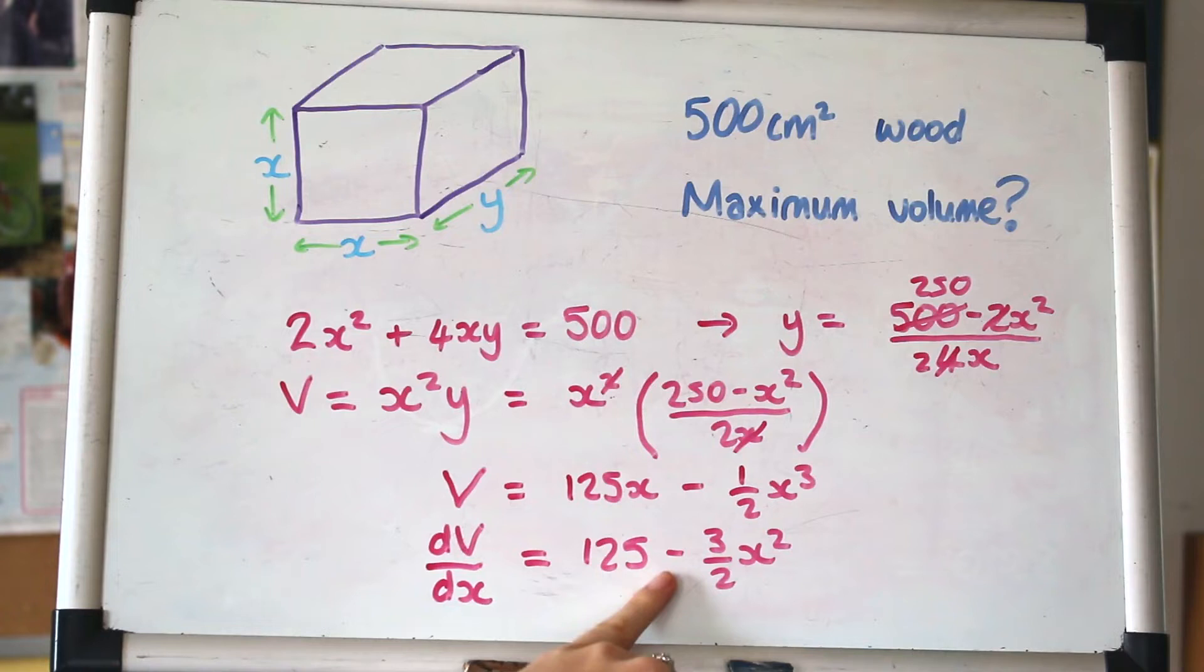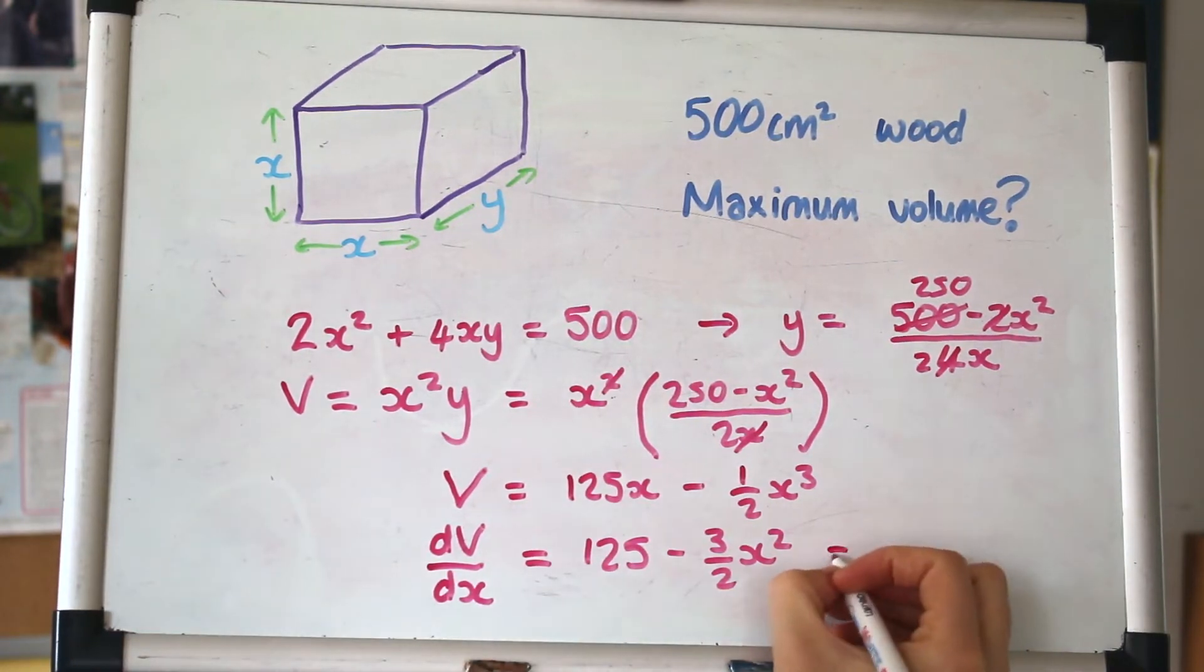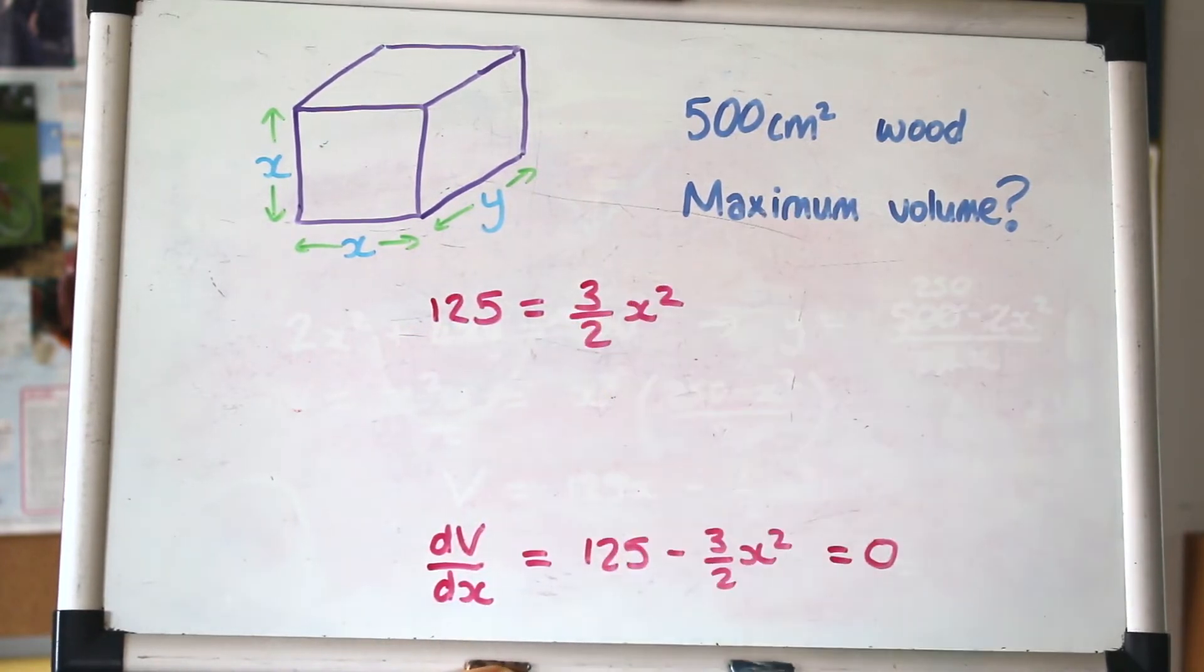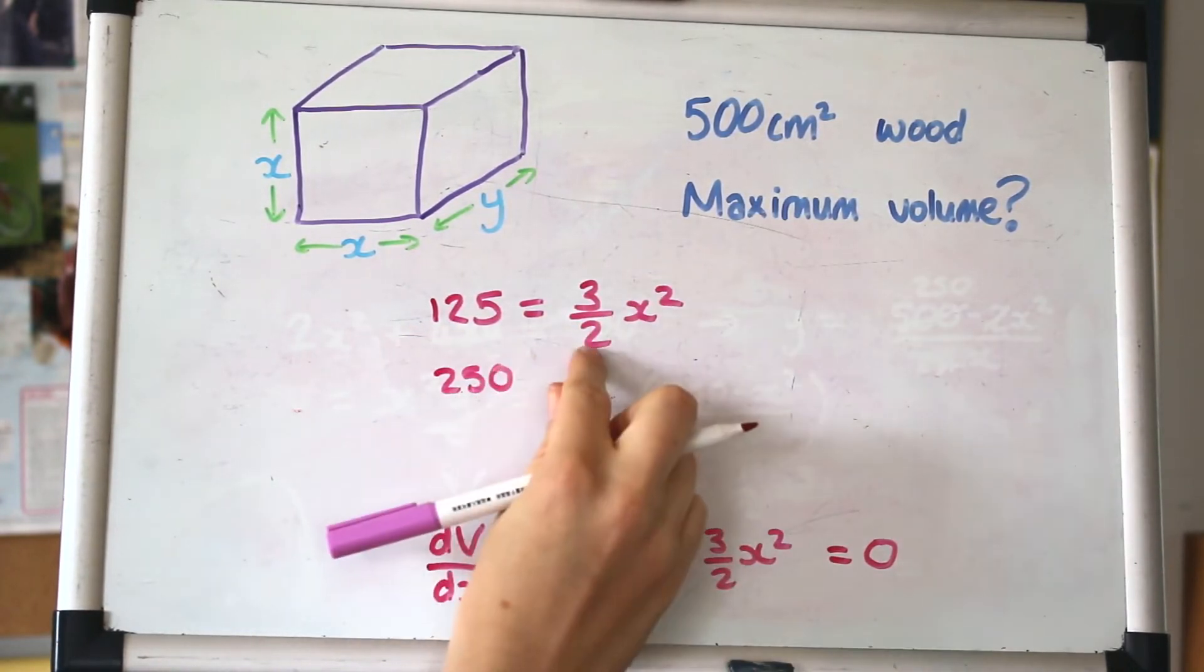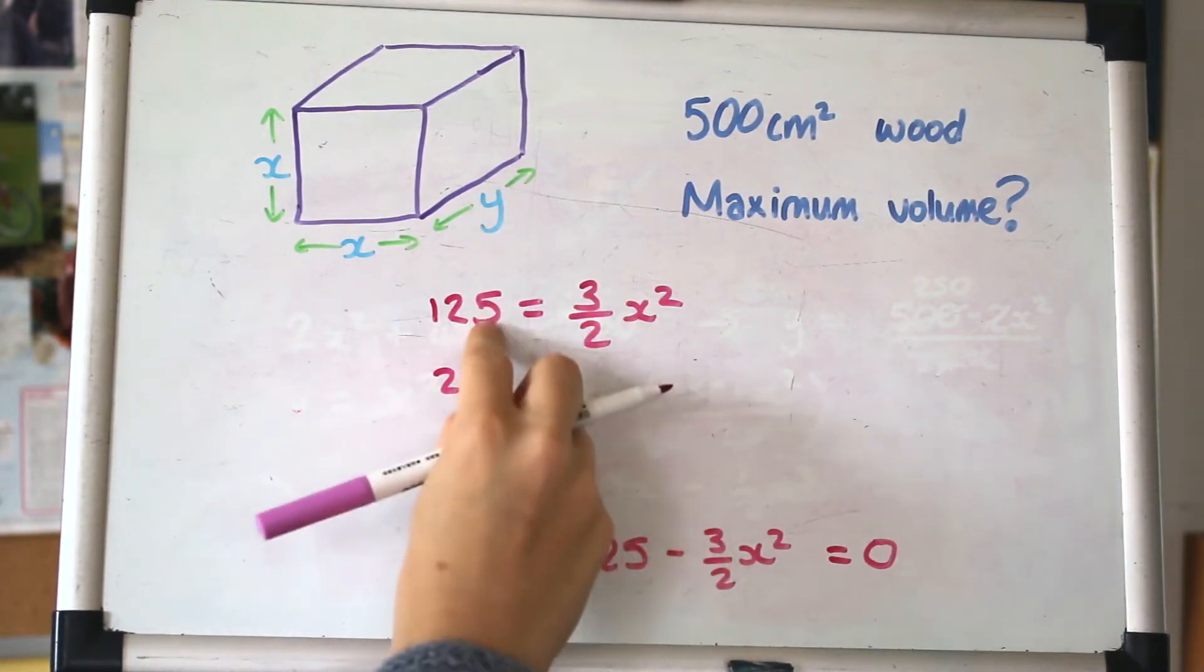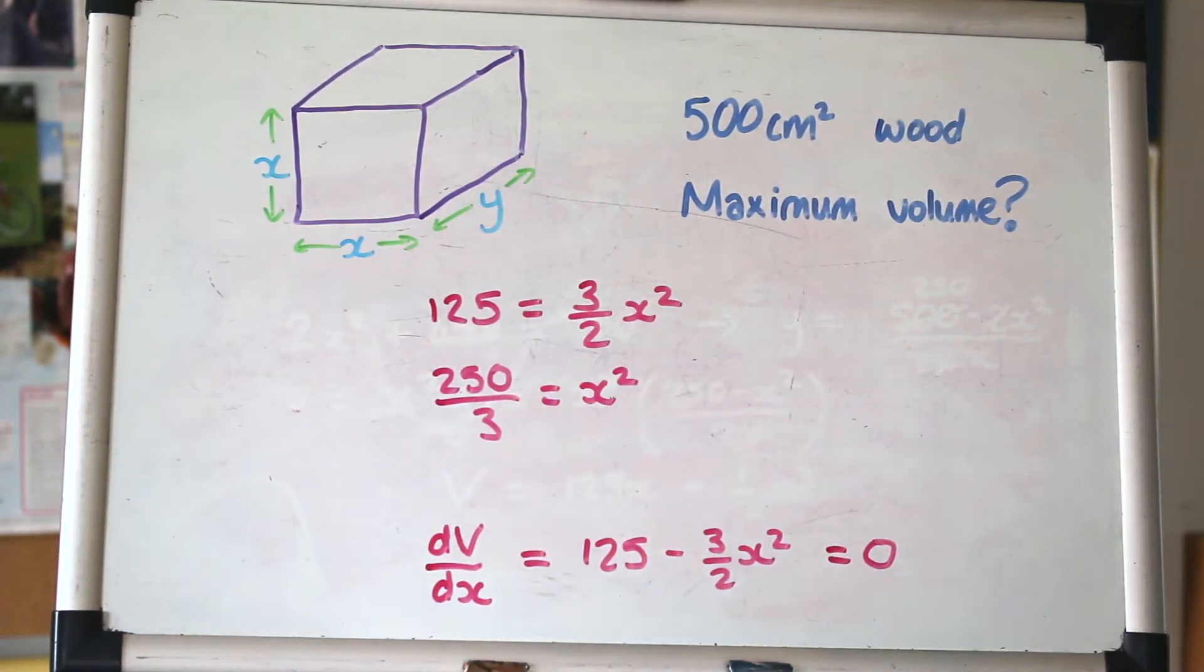Now we've got our algebraic expression for V: V = 125x - ½x³, and this is the thing that we want to maximize. This is what we're going to differentiate. When you differentiate, you'll have dV/dx on the top and the reason you're differentiating is to set that equal to zero to find those turning points on the graph.